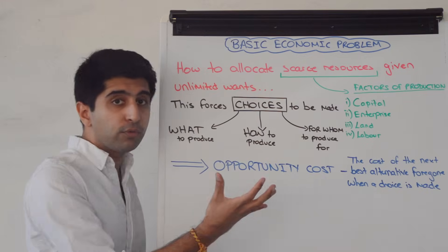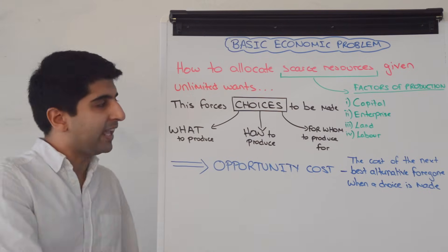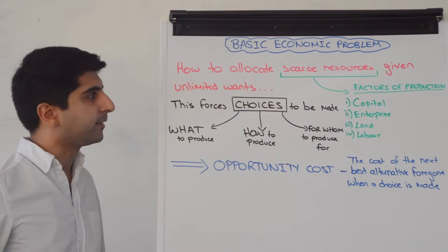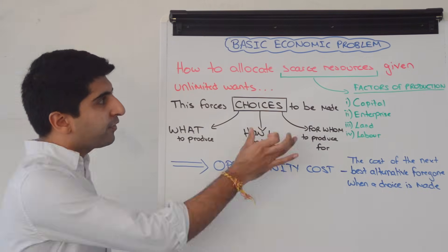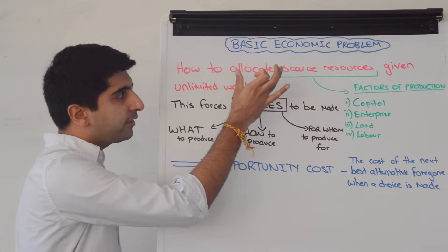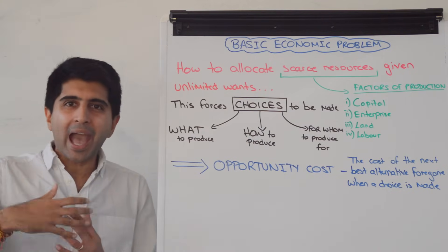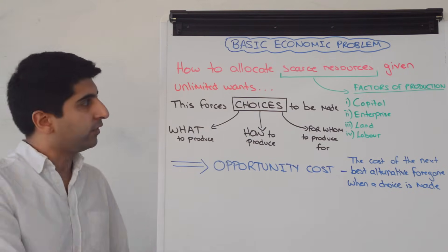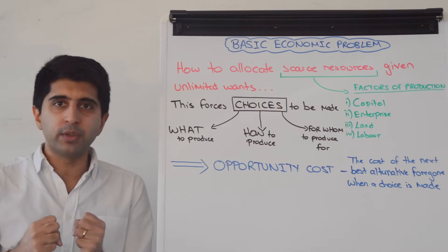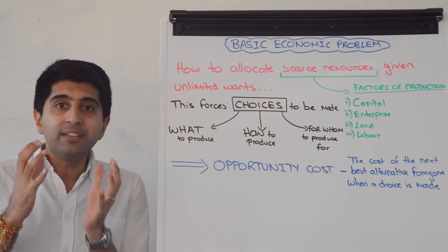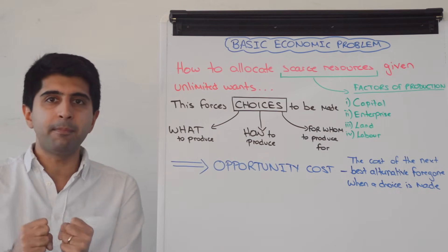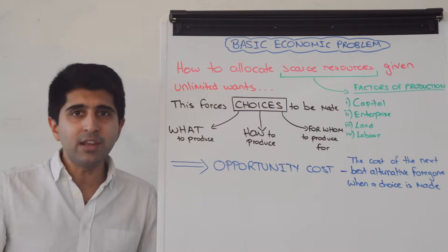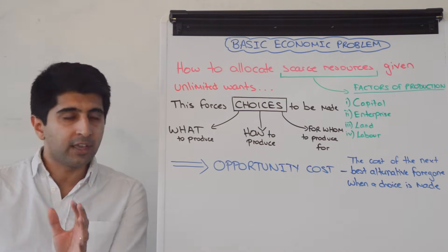So these are our scarce resources. Clearly the world doesn't provide an infinite amount of these things. We have scarce resources and we have unlimited wants. How do we allocate our scarce resources to satisfy as many wants as we can? Well, it's difficult. Choices need to be made, and economics really is a study of choice.